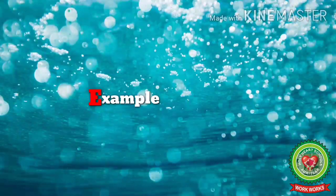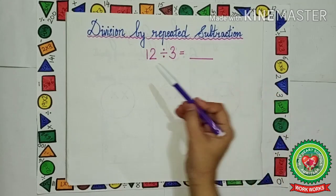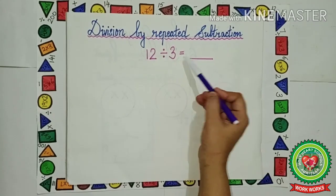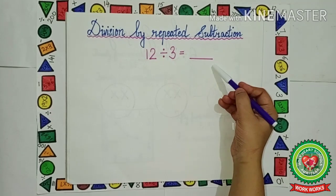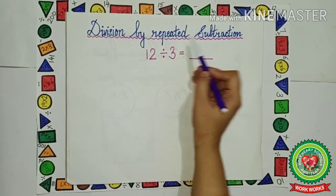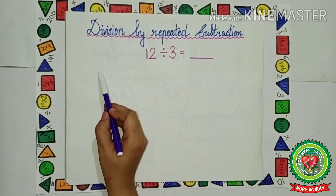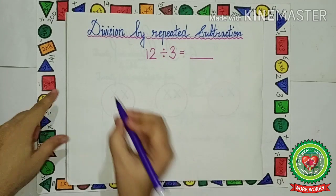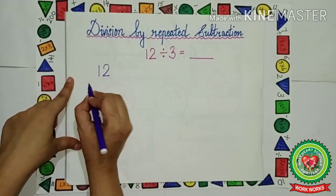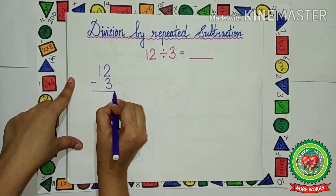Now let us take one more example. 12 divided by 3 is equal to what? We have to divide these numbers by repeated subtraction. So first of all, 12 divided by 3 — we will subtract 3 from 12. Let us subtract.